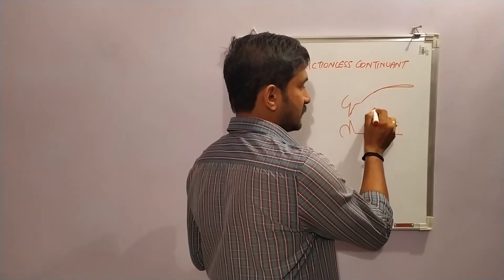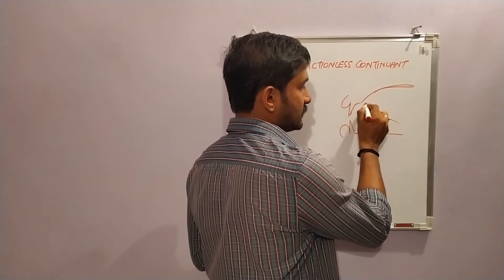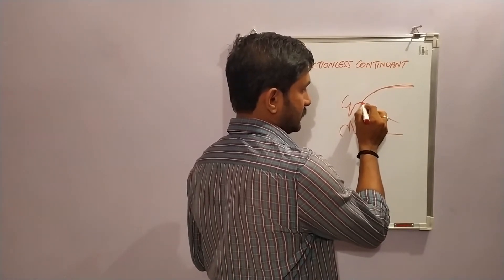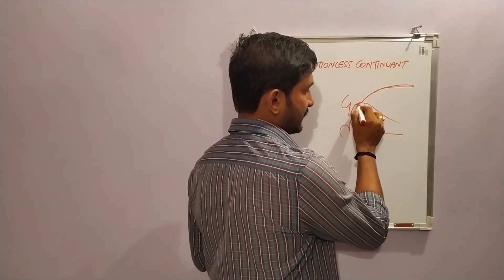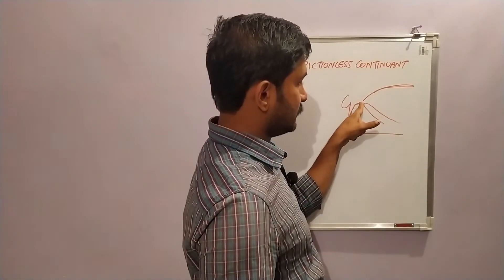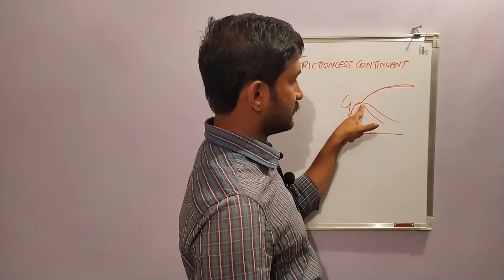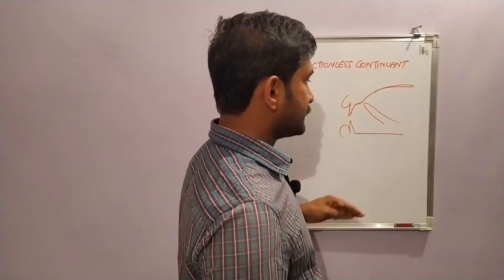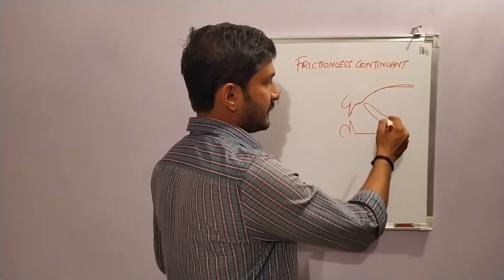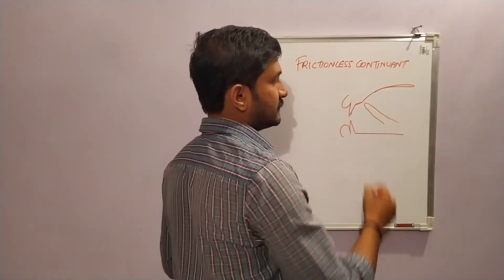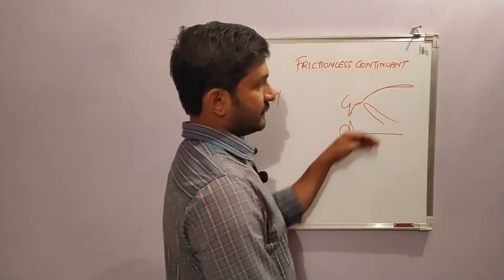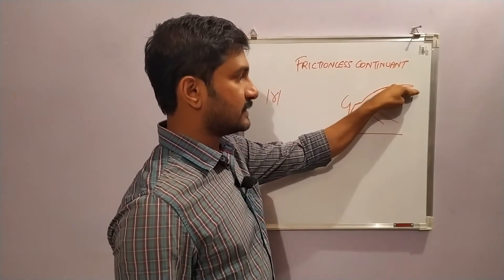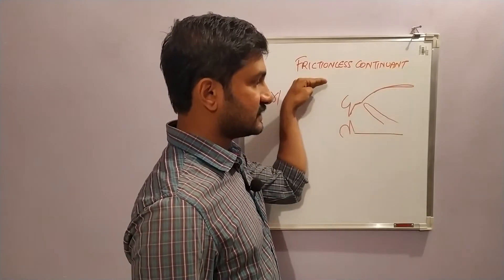For the frictionless continuant R, the articulating organ is the tip of the tongue. The tip of the tongue is brought to the back portion of the teeth ridge. This back portion of the teeth ridge is what we call the post-alveolar position. There is sufficient space for the air to escape without producing audible friction.